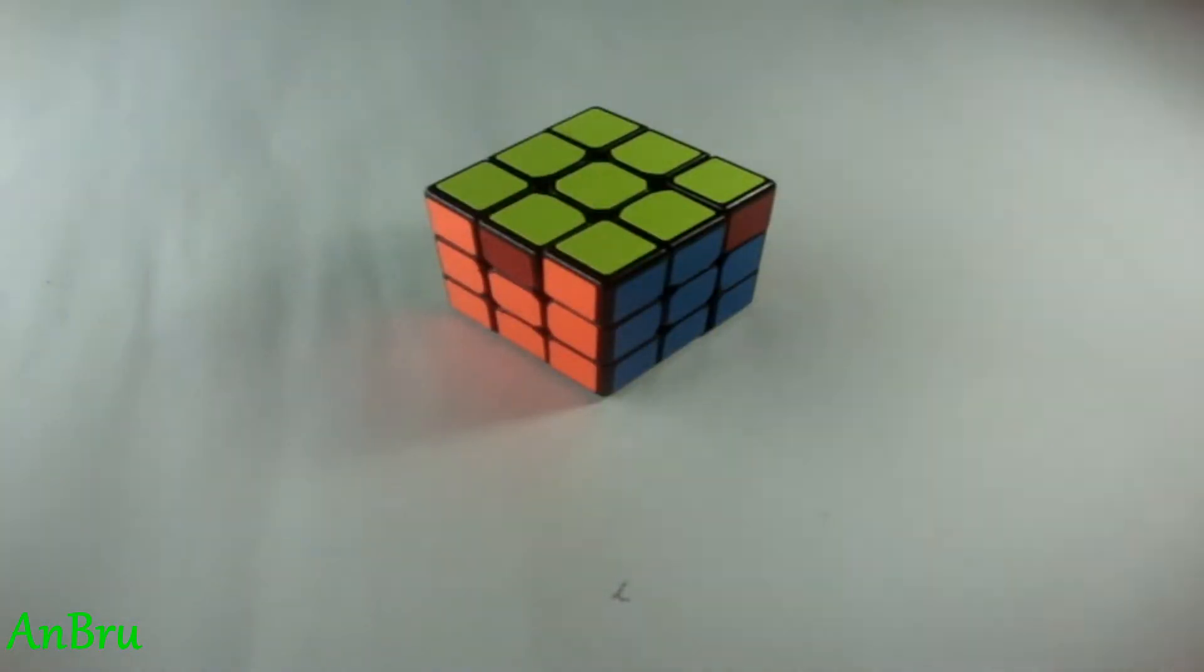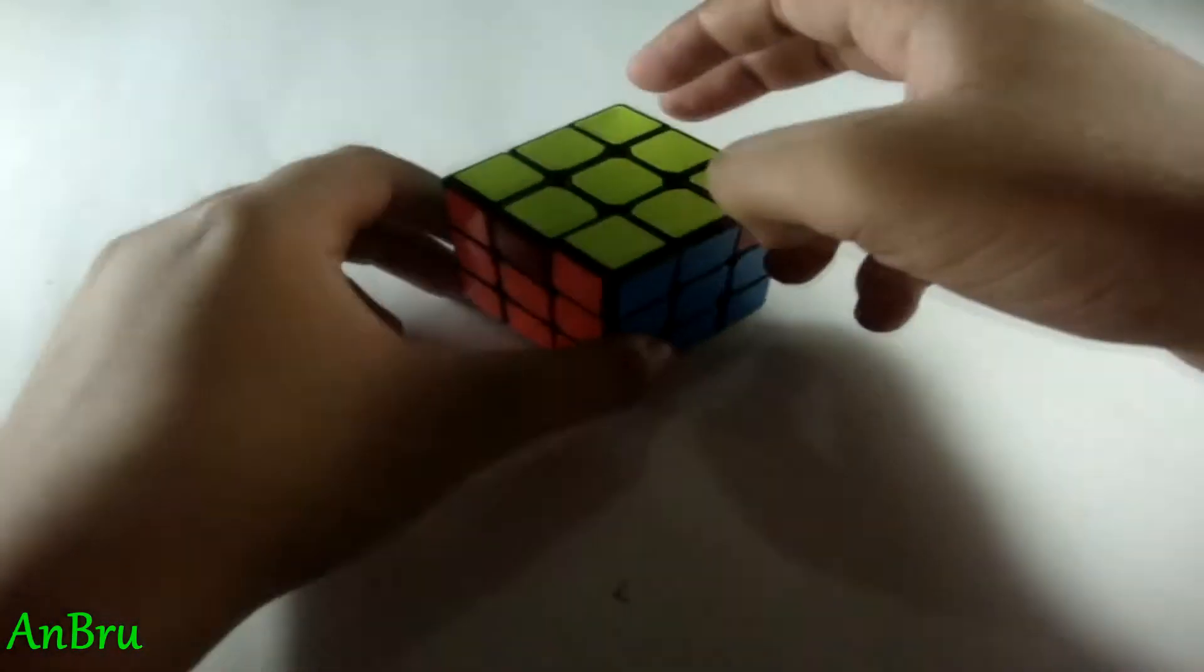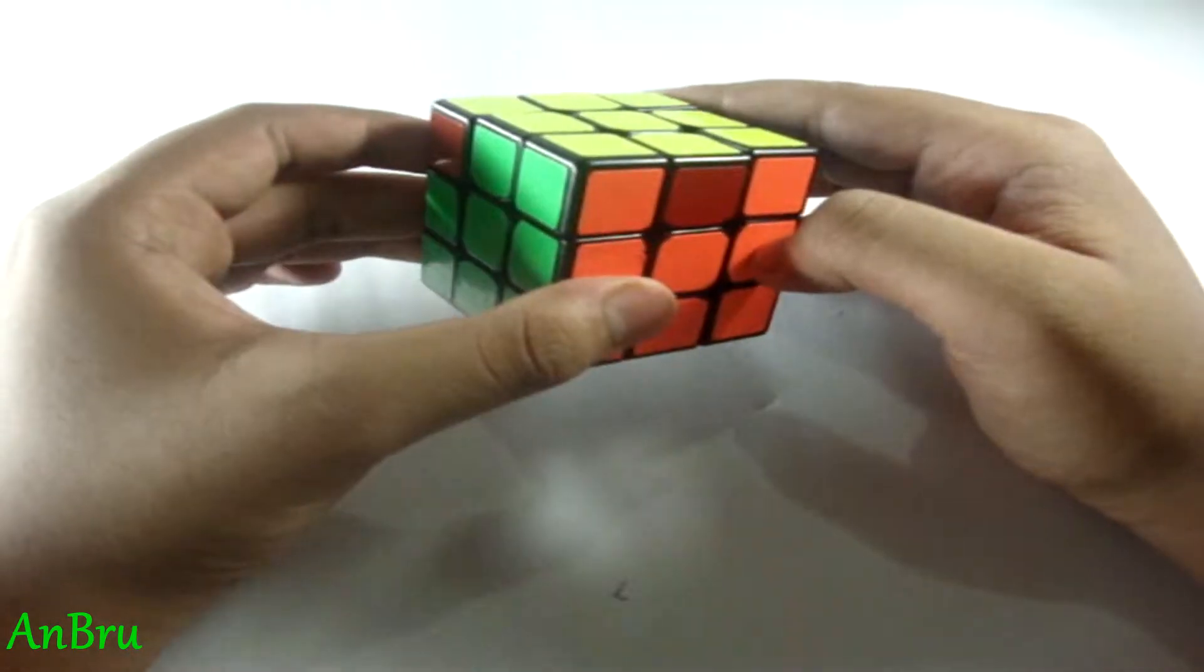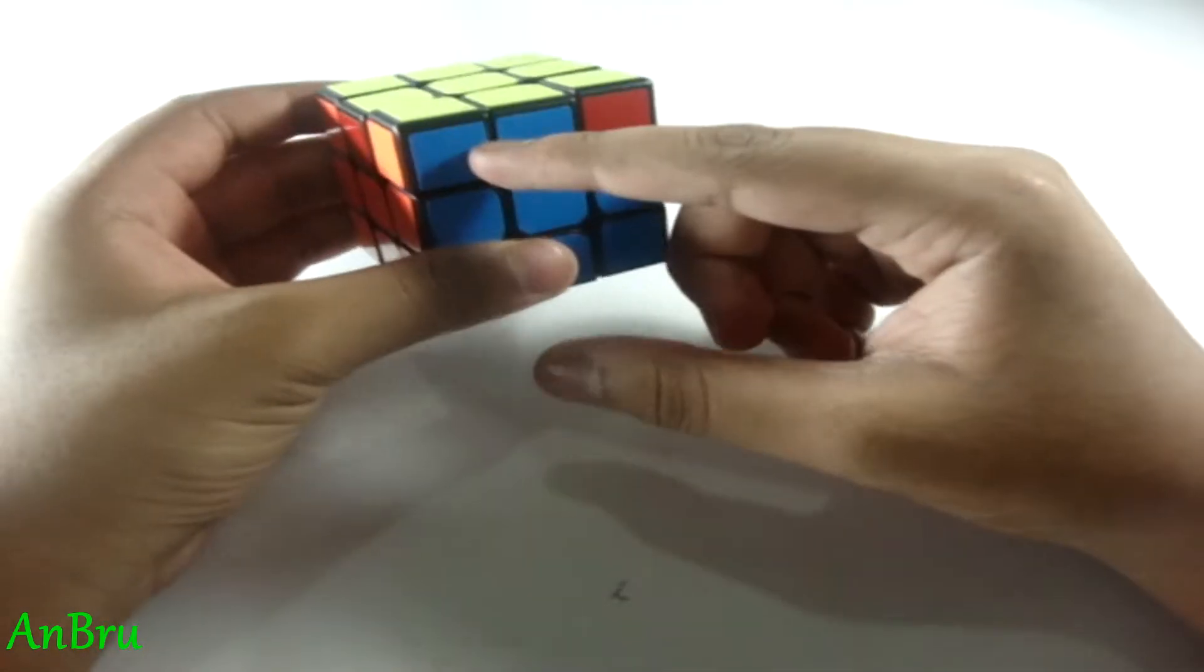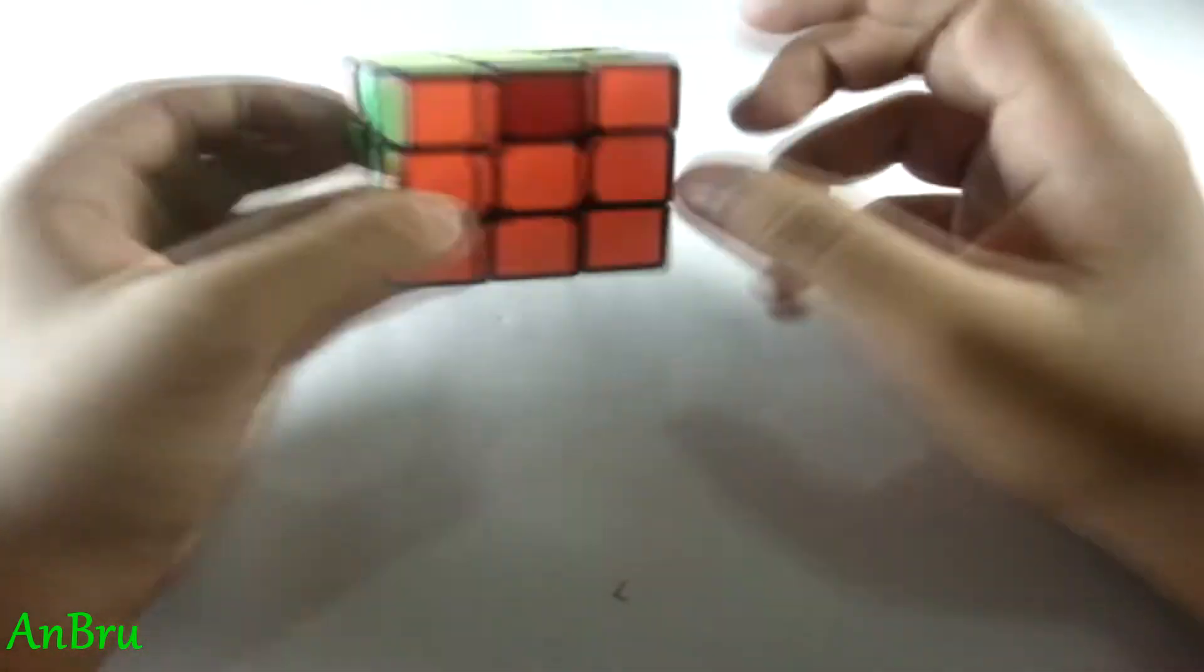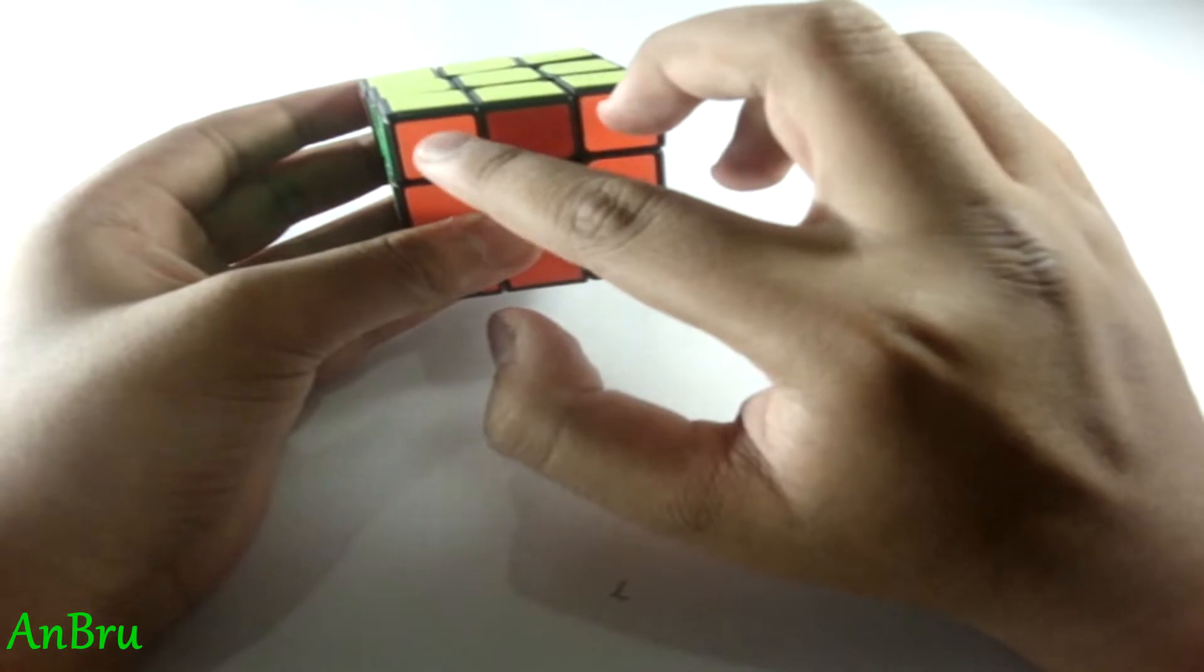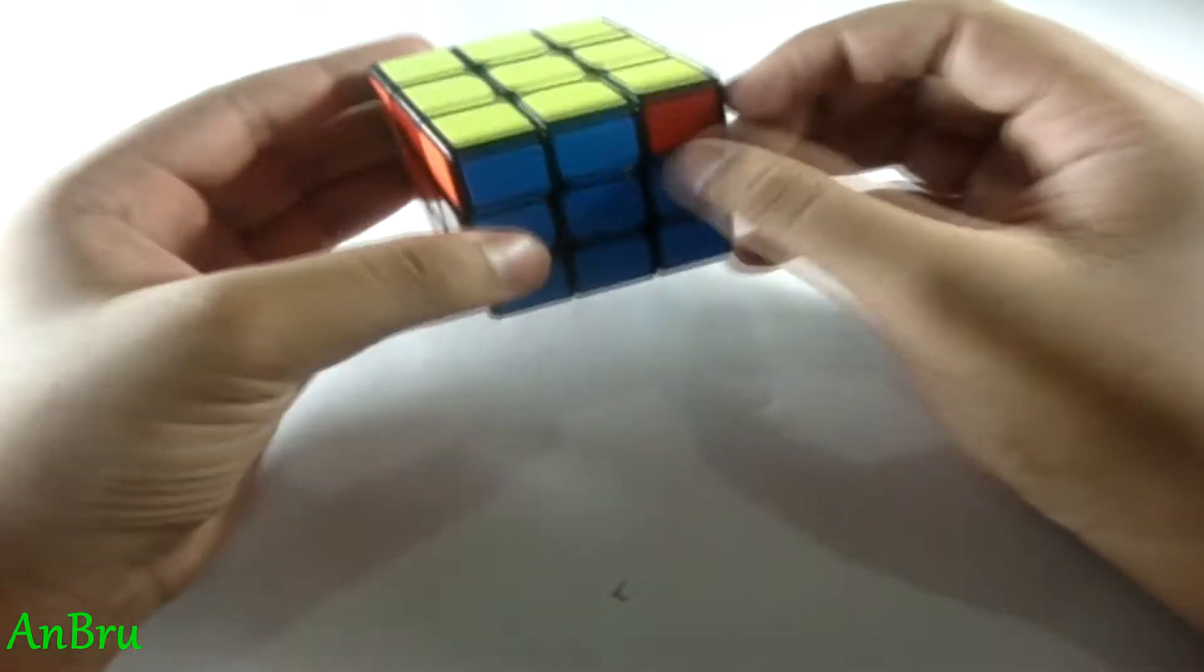Welcome back guys to another episode of how I execute my PLLs, and in this one I am going to show you how I execute my T-perm PLL. So it looks like this - there is a bar over here and they both are of opposite colors, and the two corners same color facing towards you.